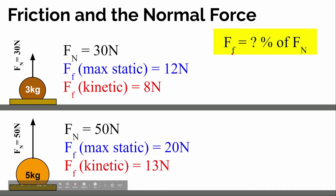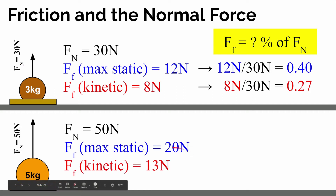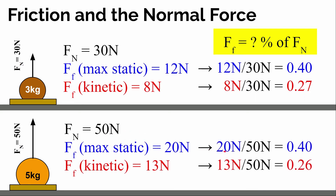I want to look at how big the force of friction is in each case as a percent of the normal force. In the 3 kilogram example, maximum static friction was 12 newtons — what percentage is that of 30 newtons? 12 newtons divided by 30 newtons gives 0.4, so static friction was about 40% as big as the normal force. Kinetic friction was about 27% of the normal force. In the 5 kilogram example, 20 newtons divided by 50 newtons is also 0.4 — exactly 40% of the normal force. And for kinetic friction, 13 newtons divided by 50 newtons is about 0.26 — really close.